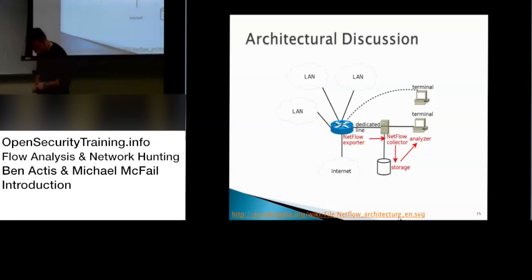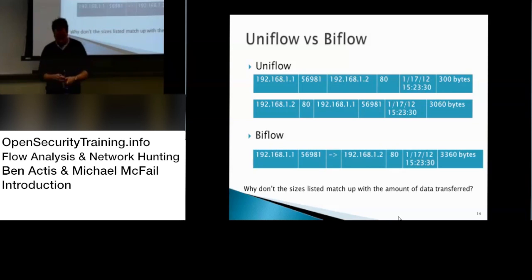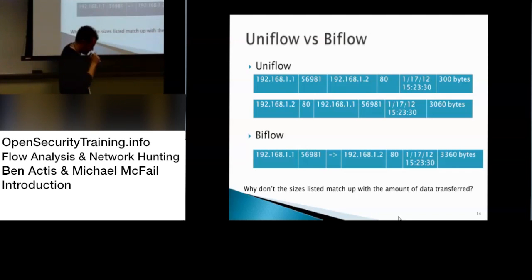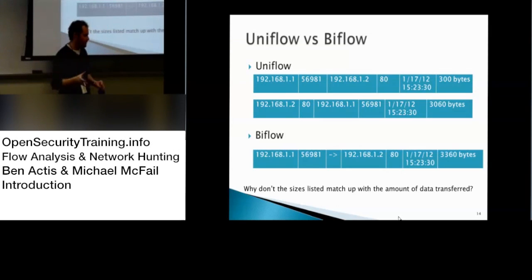On the BiFlow arrow indicator: yes, it indicates who originated the connection. You'll see that in a couple of different tools — Argus does that, Bro does that. SiLK is UniFlow. I'll talk about how each tool handles flags differently when we get into each one, because that's one of the nuances.